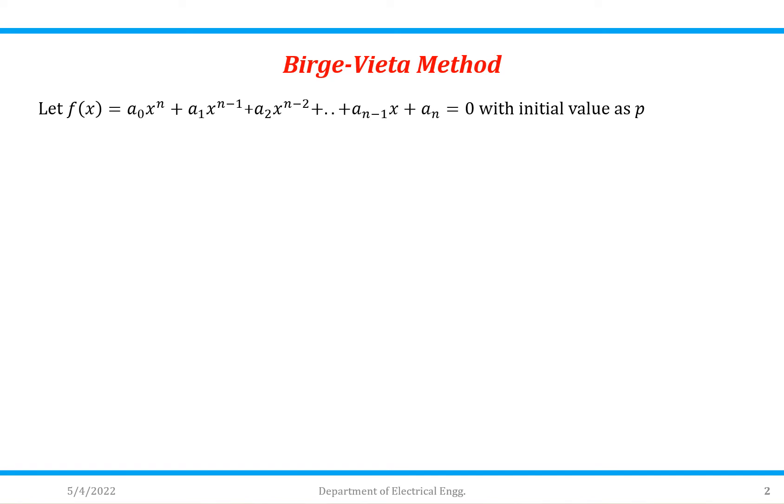Let us consider an algebraic equation which is represented by f(x) = a₀xⁿ + a₁xⁿ⁻¹ + a₂xⁿ⁻² up to aₙ with initial value as p.